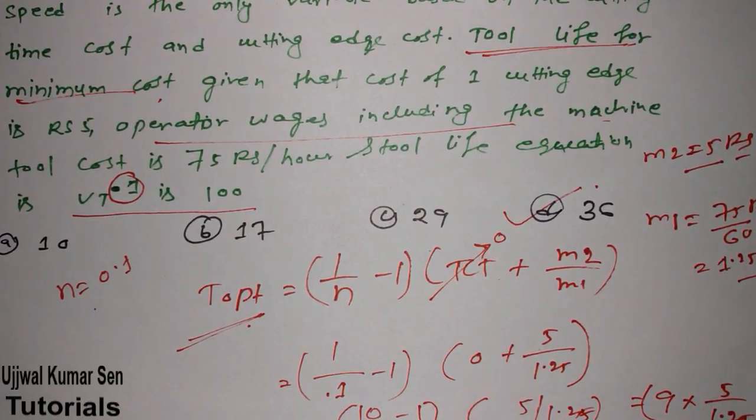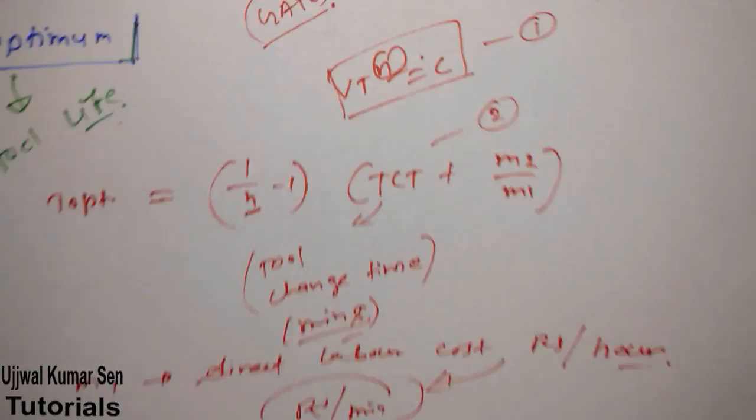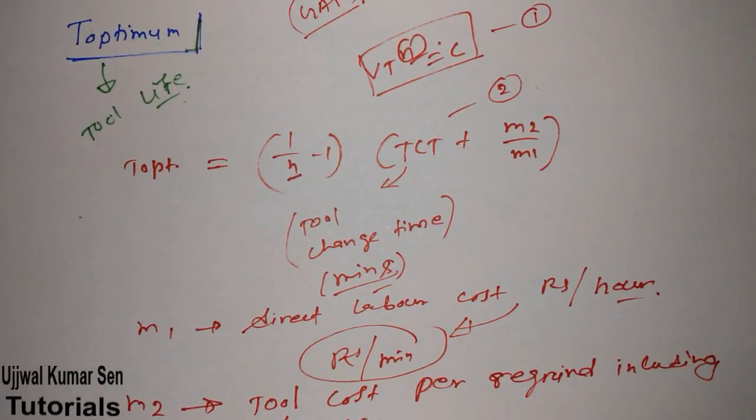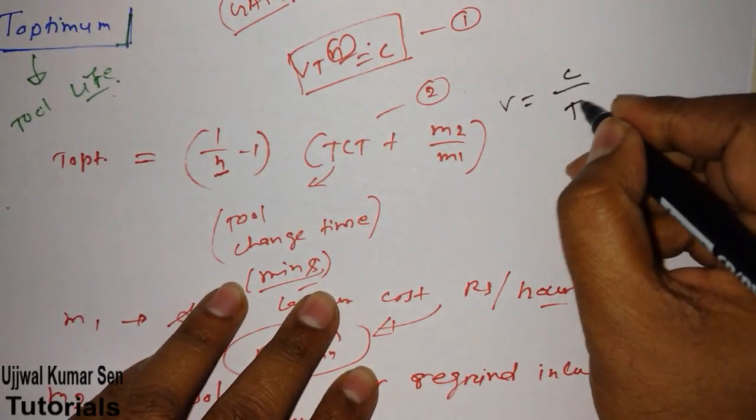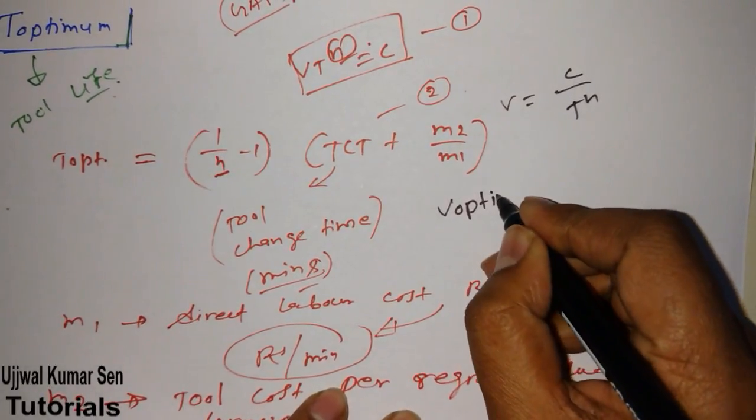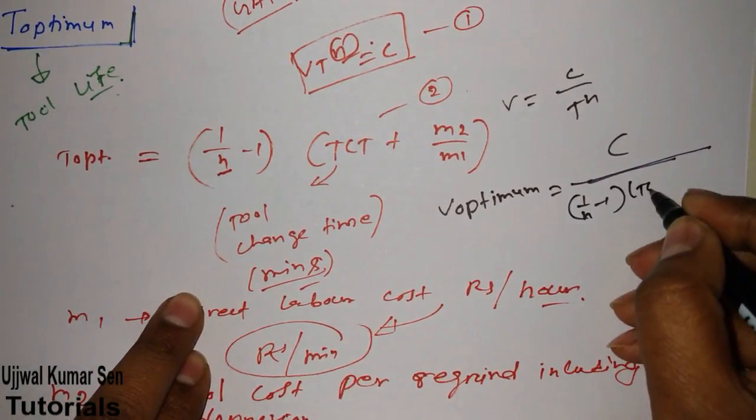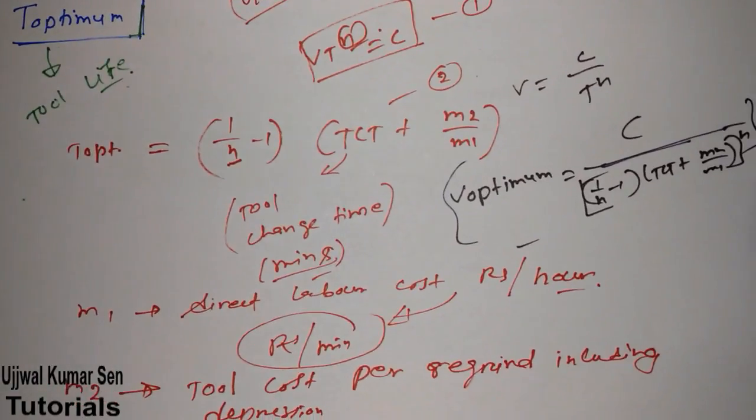Now, as you are watching this video, let me share with you how to find out V-Optimum. Once you know how to find out T-Optimum, can you tell me how to find out V-Optimum? Because I have already shared with you that equation, that is V T to the power n is equal to constant. From this equation only, you can realize how to find out V-Optimum. From this equation we can write V is equal to C by T to the power n. If we wanted to find out V-Optimum, then we have to write in the place of T, T-Optimum. That is 1 by n minus 1, TCT plus m2 by m1, and its whole to the power n.